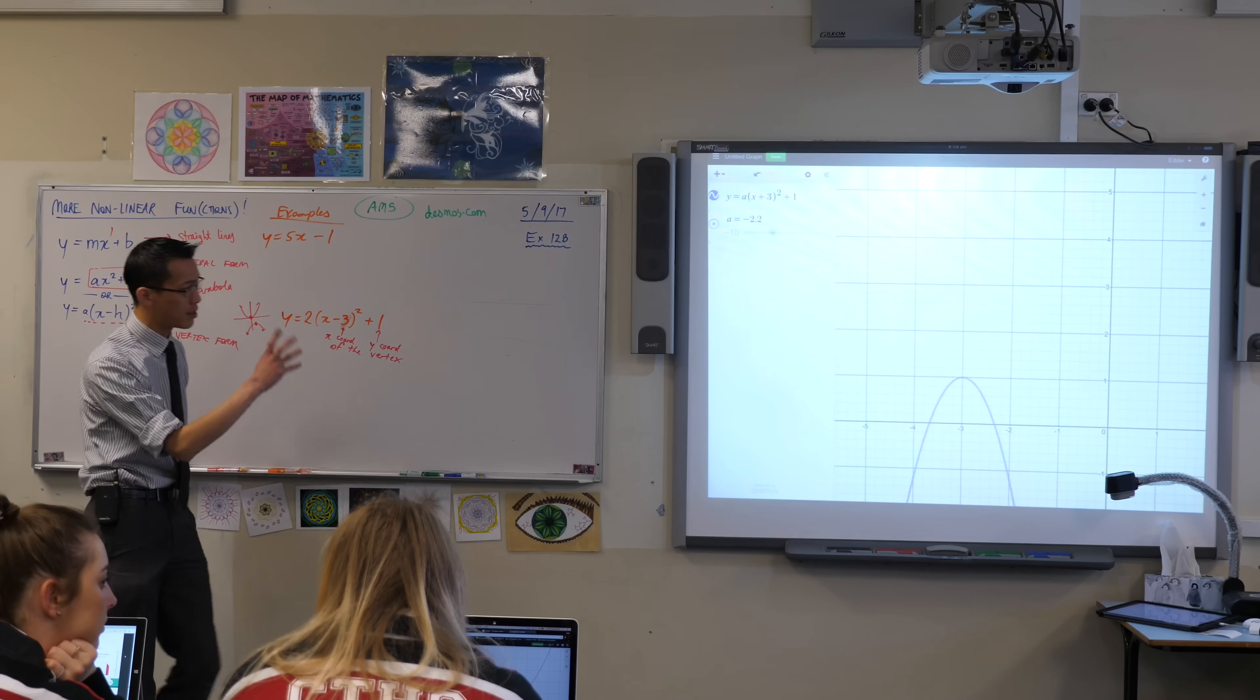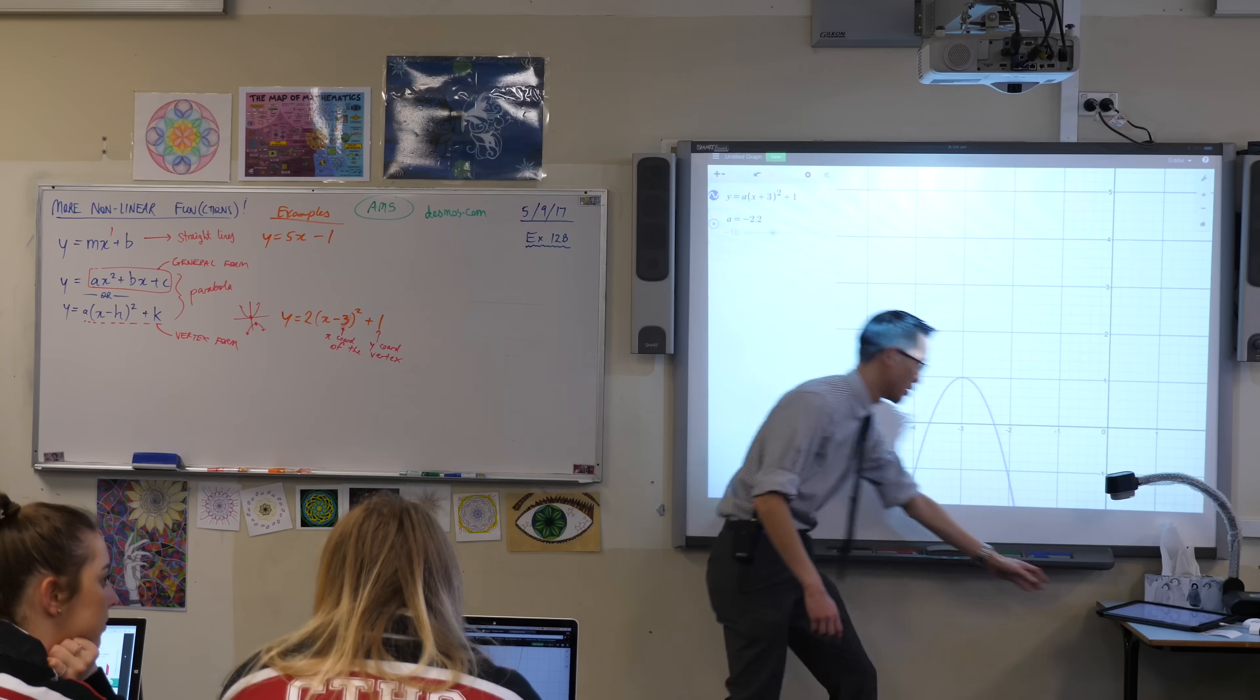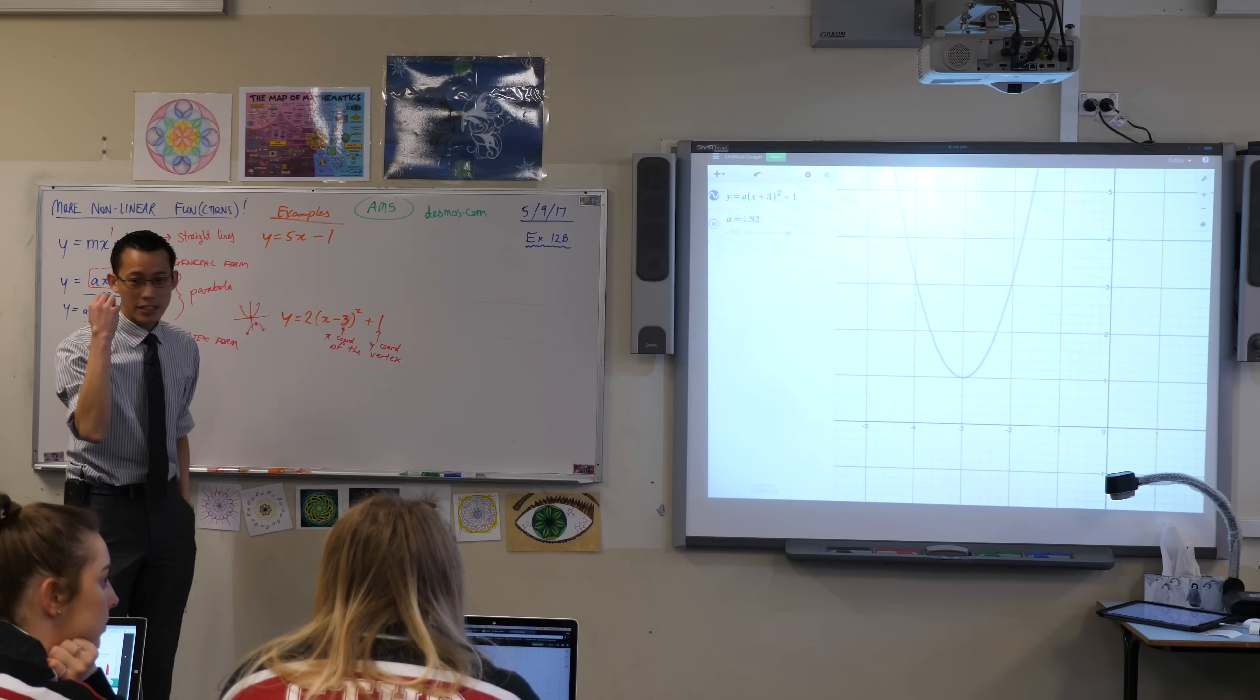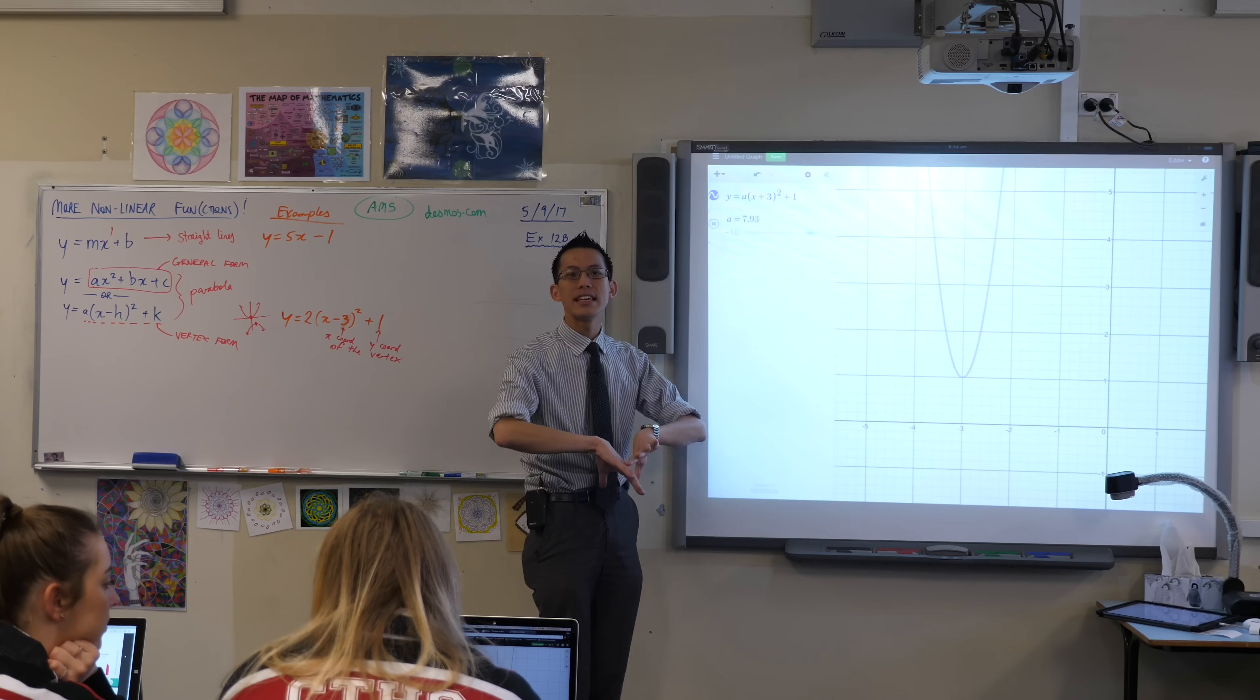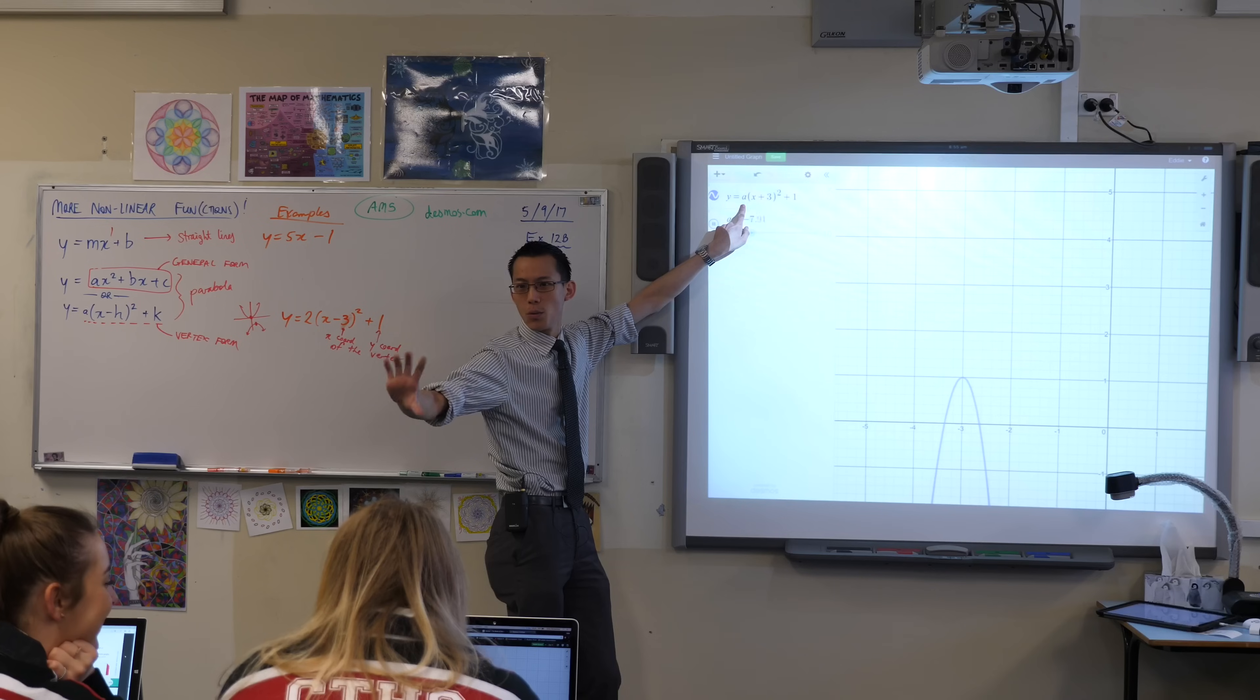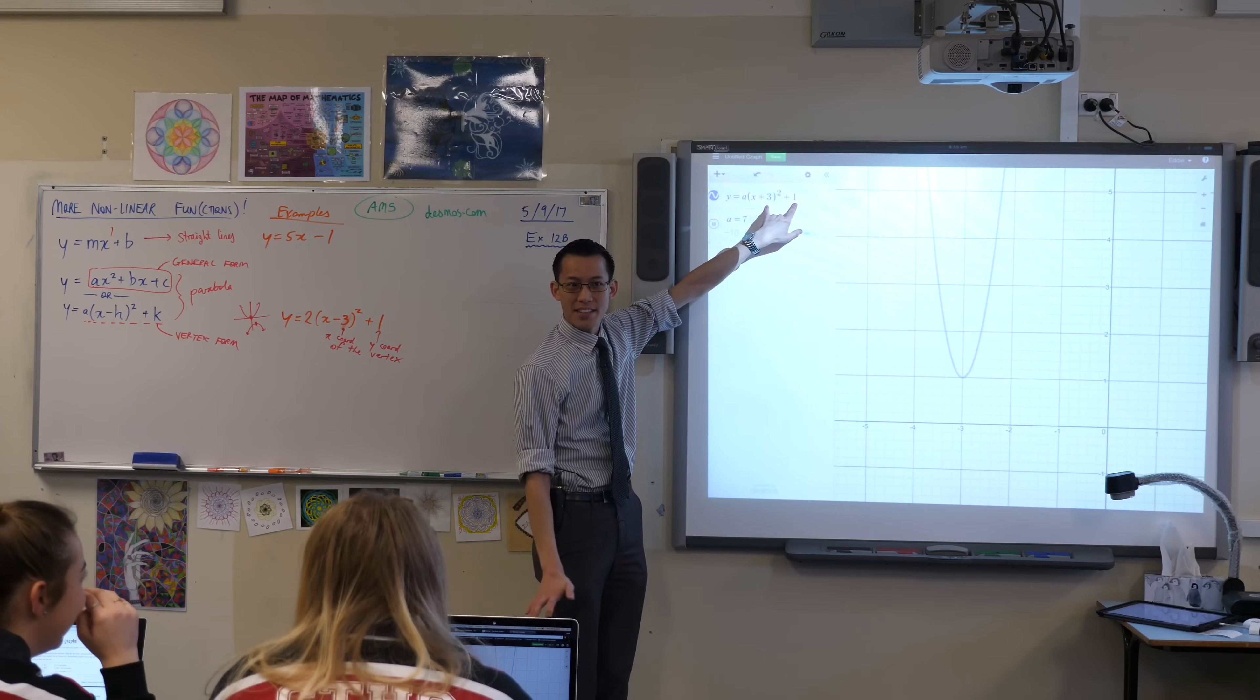So use Desmos to play around with this, but just like before, in fact, I'm going to hit the animate now so it'll move without me talking. Notice where the vertex is, the vertex is always locked in place, no matter what A is. The way we would say it is, the vertex is independent of A. A can change and be whatever you want. The vertex doesn't depend on A, the vertex depends on these guys.